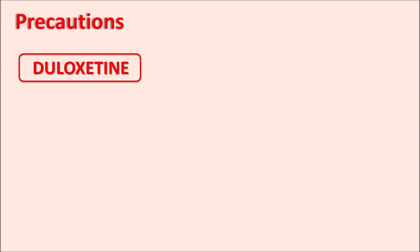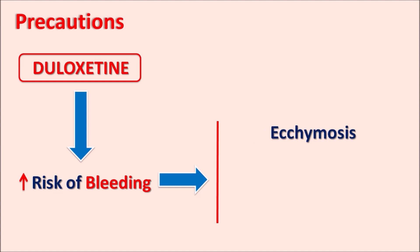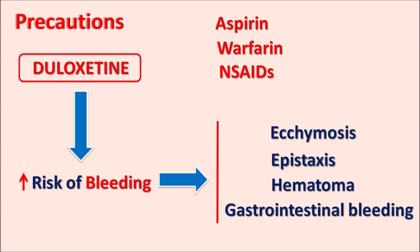Similarly, Duloxetine can increase the risk of bleeding in patients. This may lead to ecchymosis — pooling of blood under the skin — epistaxis (nasal bleeding), hematoma, blood in the urine, and gastrointestinal bleeding. All these can be observed with Duloxetine along with other SSRIs and SNRIs. This risk of bleeding can be further increased when combined with other drugs such as aspirin, warfarin, and NSAIDs.